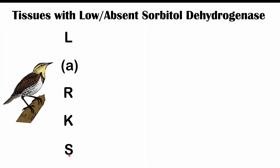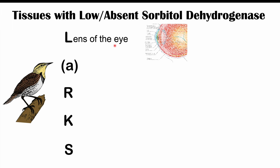The L in LARKS stands for the lens of the eye. The lens lacks sorbitol dehydrogenase, so high glucose activates aldose reductase, producing sorbitol that cannot be cleared. Sorbitol draws water in, causing damage and cataracts. This explains the increased cataract risk in type 2 diabetes, and infantile cataracts can also occur in classic galactosemia.